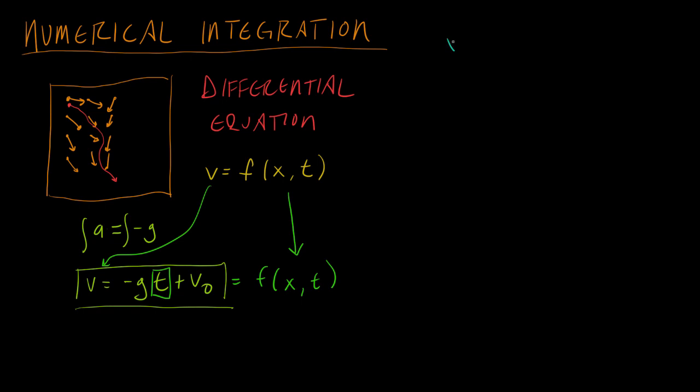Now, how did we solve that differential equation? You'll remember that we had the initial position of an object, that was the position at the initial time, and we had an initial velocity, that was the velocity of the object at the initial time. Then x1 is the position at the next time.